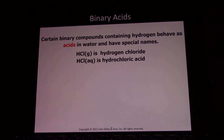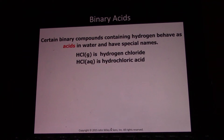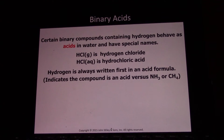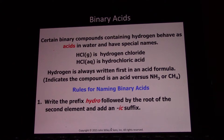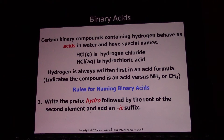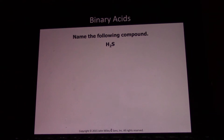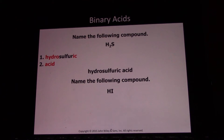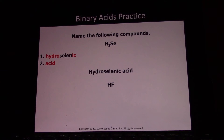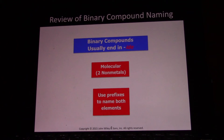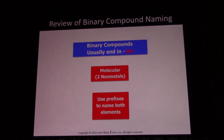Certain binary compounds containing hydrogen behave as acids in water and have special names. When hydrogen chloride is dissolved in water, it becomes hydrochloric acid — notice it goes from gas to aqueous. Hydrogen is always written first in an acid formula, indicating it's an acidic hydrogen. To name a binary acid: use the prefix hydro, followed by the root of the second element, then IC, and end with the word acid. Examples: hydrosulfuric acid, hydroiodic acid, hydrochloric acid.